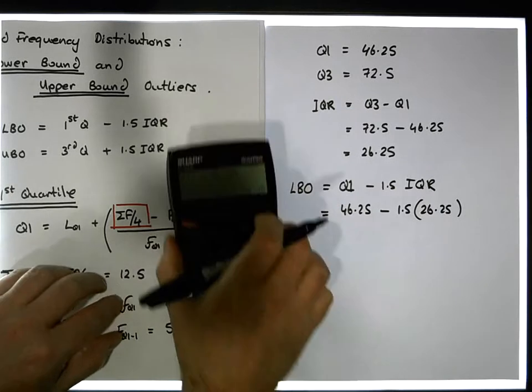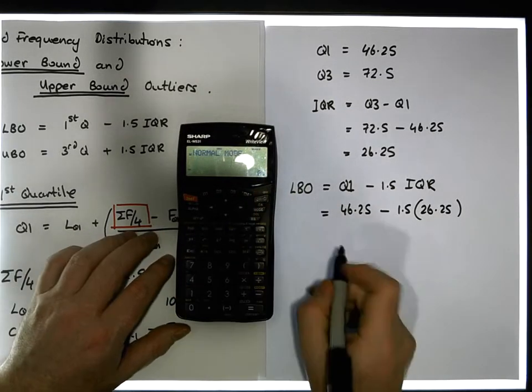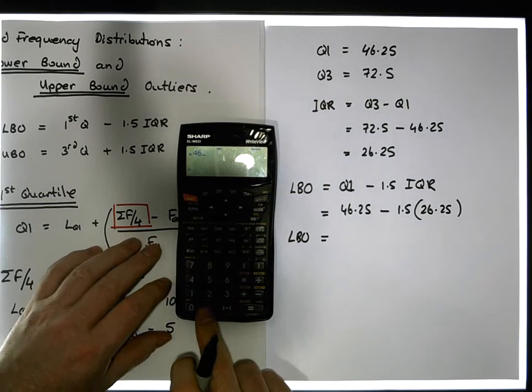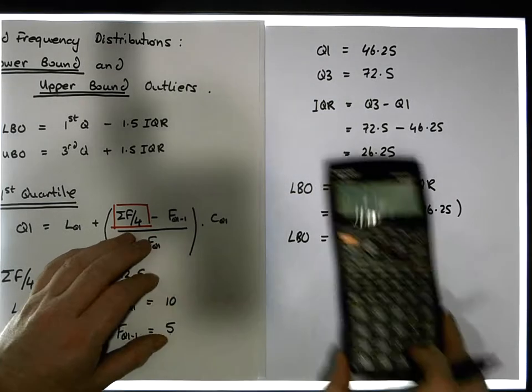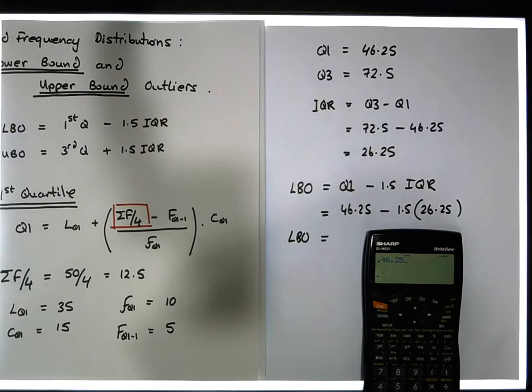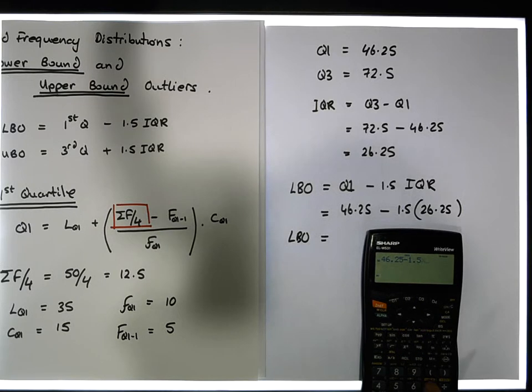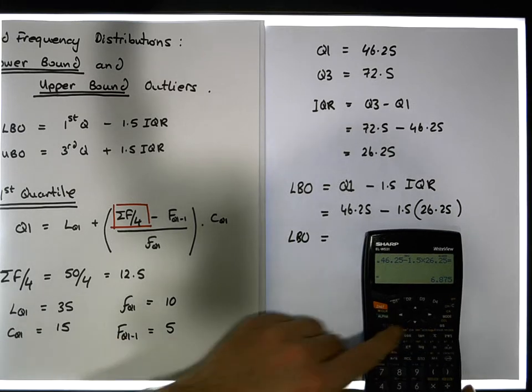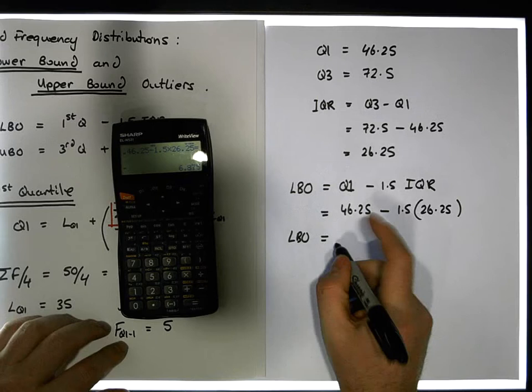So in this particular case here, the lower bound outliers, the LBOs, are equal to 46.25, 46.25 minus 1.5 times 26.25, which gives us a value of 6.875, so 6.875.